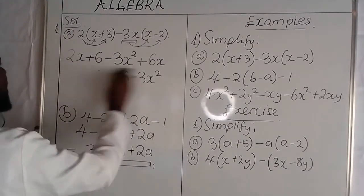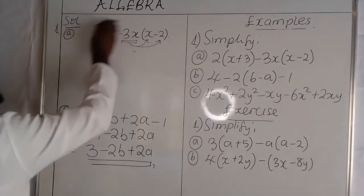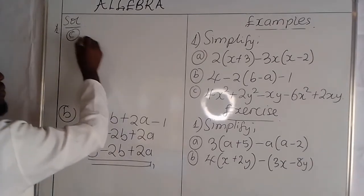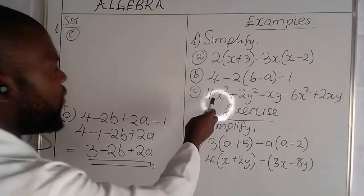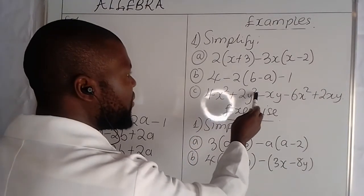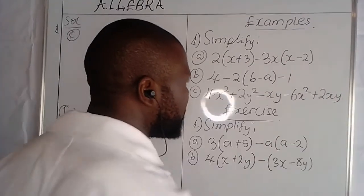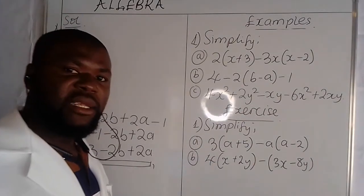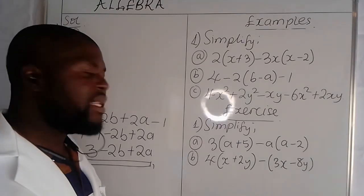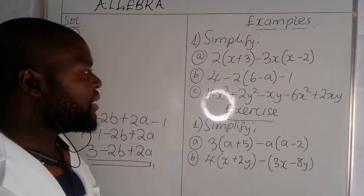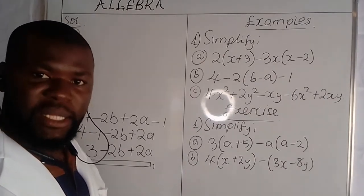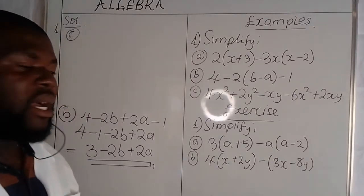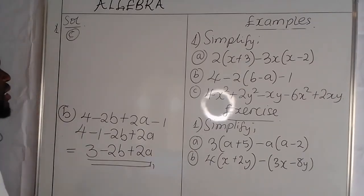Let's look at our last example. We have 4x squared plus 2y squared minus xy minus 6x squared plus 2xy. Here there is nothing to expand — we just need to identify like terms. Like terms are those terms which have the same variable, the same letters. When you identify like terms, you are at liberty to add or subtract.